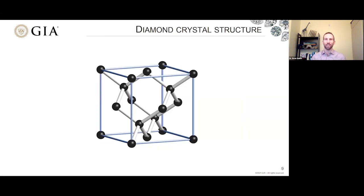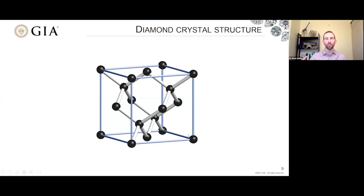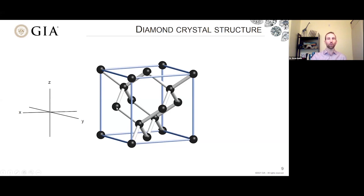In diamonds, we have a unit cell — the smallest picture you can draw that still describes a diamond and all of its symmetry. We've got little black beads representing carbon atoms, gray bonds between them, and the blue edges showing the crystallographic unit cell. It gives us a 3D coordinate system in X, Y, and Z, which provides a way to describe different atoms within the crystal or different orientations of vectors and planes, so we can describe and understand crystals in a more coherent way.